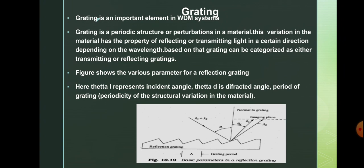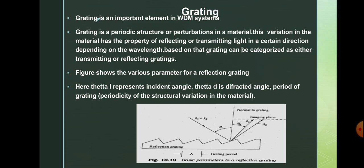You can see that the various parameters in the reflection grating are: theta i, the angle of incidence, and theta d, the angle of refraction or diffraction angle. The periodic perturbation and the grating period are also shown here. The period of grating actually shows the periodicity of the structural variation in the material, where the refractive index will be varying periodically.